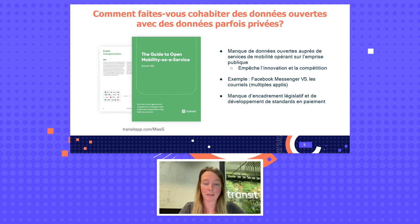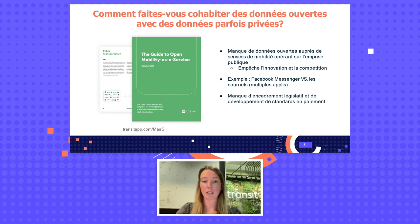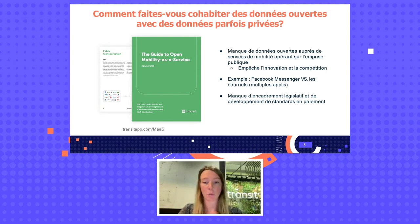Recently we've written a guide — the link is on this image — where we try to explain what data is available, what data is missing, and what steps can be taken to make that data available. There are a lot of puzzle pieces. Adaptability — we heard that in the previous panel, and that theme is recurring for all stakeholders.